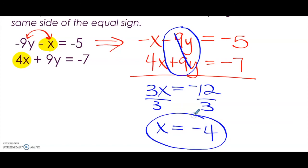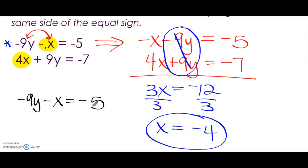So let's go get our Y coordinate. I'm going to use the first equation, because subbing in with the negative sign is interesting. So negative 9Y minus X equals negative 5. We're going to sub negative 4 in for X. That's negative 9Y, minus sign from the equation, and negative 4 is what we substitute in.